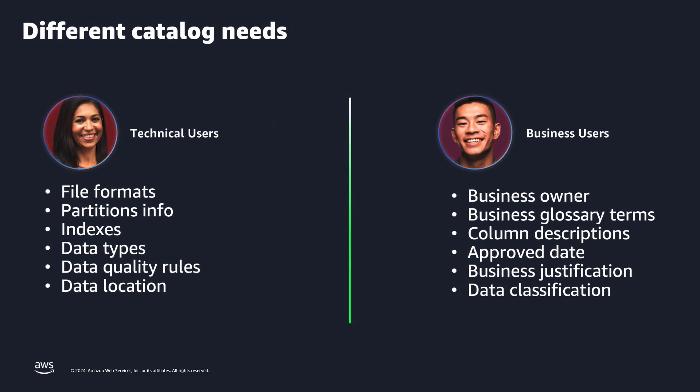Depending on the type of users that you are, you may have different data catalog needs. For example, technical users want to see things like file format, data types, data location, and so on. And business users want to see things like business glossary terms, column descriptions, business justification, data classification, and so on. Even though it's the same data, different types of users want to see different information.